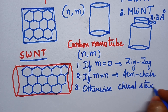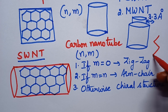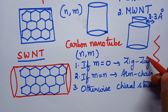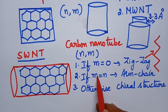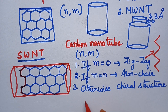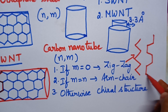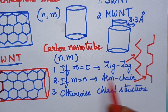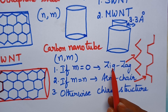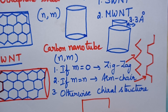Chiral structure means they have a symmetrical structure. Zigzag structure means the carbon nanotubes will have a zigzag kind of structure. Whenever the two values are equal, that means M equal to N, it results in the formation of armchair structure. If one of the values is equal to 0, it results in zigzag structures. Otherwise, it results in the formation of chiral carbon nanotubes, meaning both are symmetrical to each other.